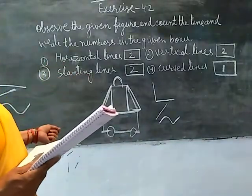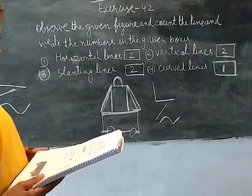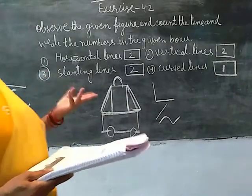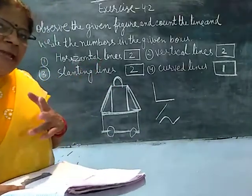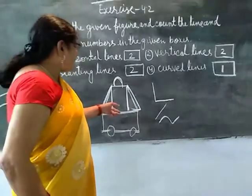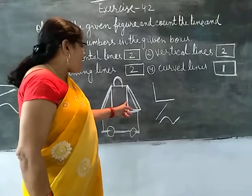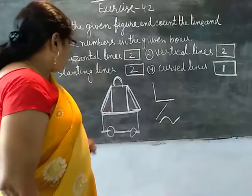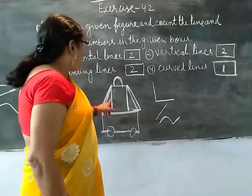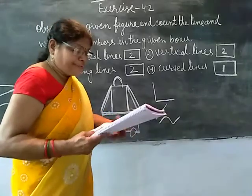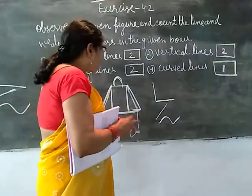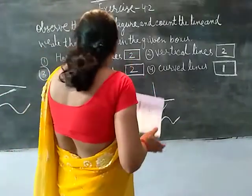If the vertical line goes... this means the vertical line is about standing line. It is called the standing line. Standing line means standing line. Standing line is 1 and 2. Here is standing line — one, two, three, four. Standing line. 1, 2, 3, 4. Standing line. Floating line. Horizontal.